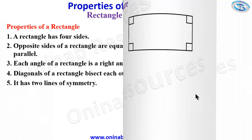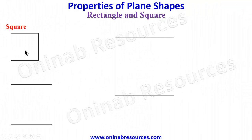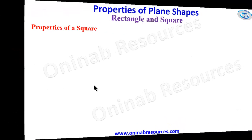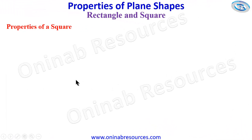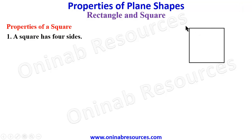We then go to square. We have various sizes of square here — all the sides are of equal length. You can see all the sides are of equal length. The first property is a square has four sides: one, two, three, four.